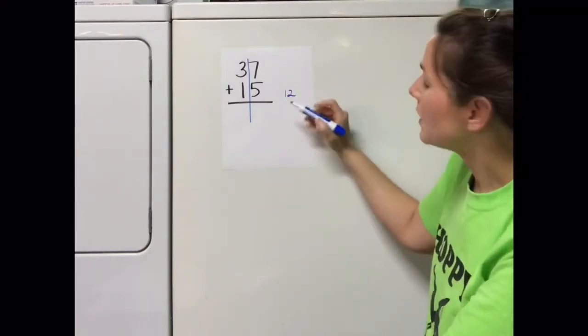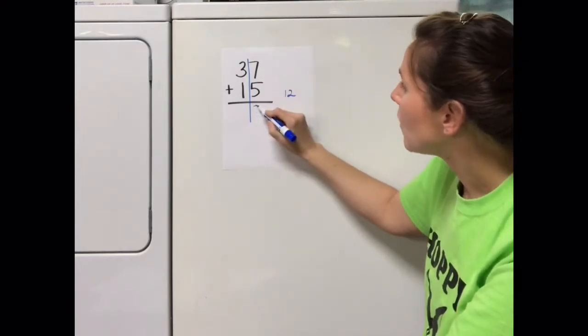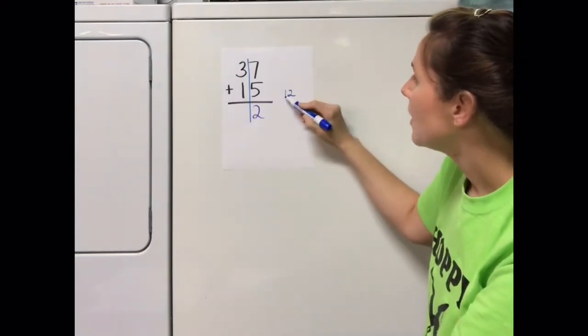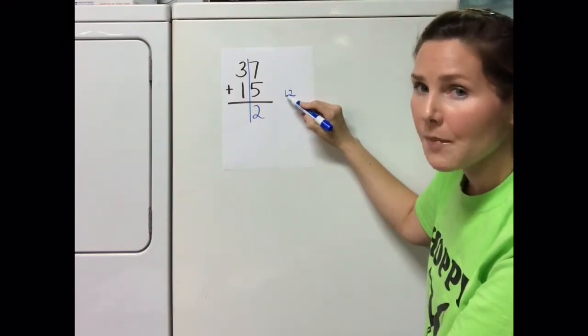The 2 in the number 12 is in the ones column, so it's okay to write that in the ones column. But this 1 is in the tens column, so I'm going to write it on top of the tens column.